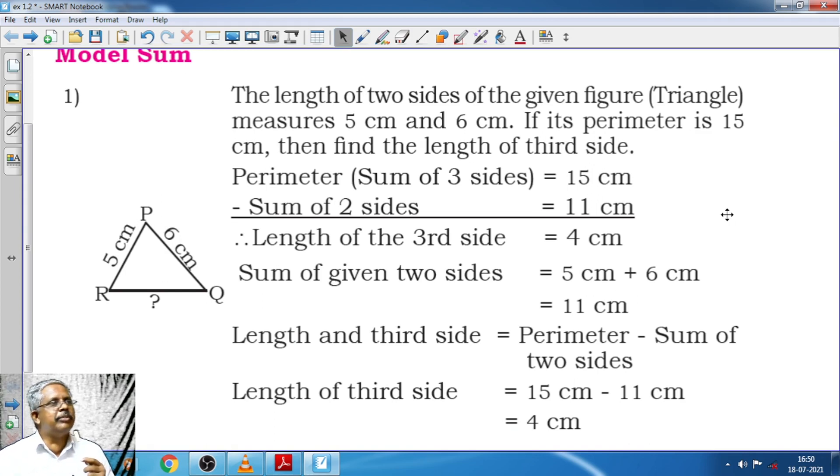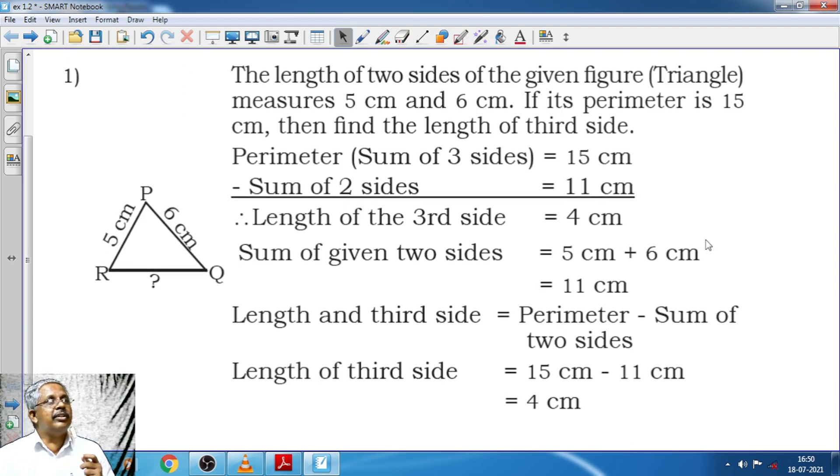That means perimeter of the triangle PQR is equal to PQ plus QR plus RP. That is what we have studied in the previous chapter. Now we have the unknown side RQ. Our intention is to find RQ.